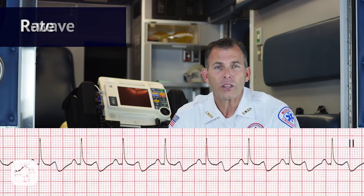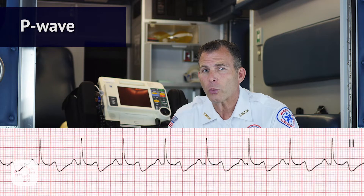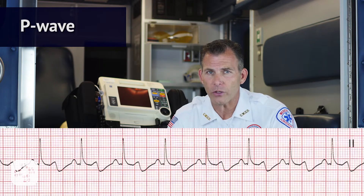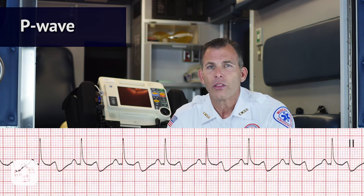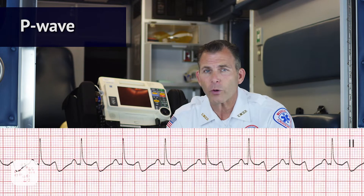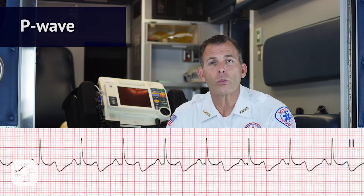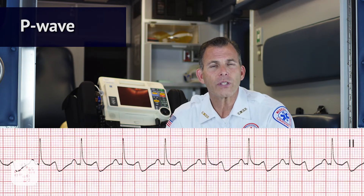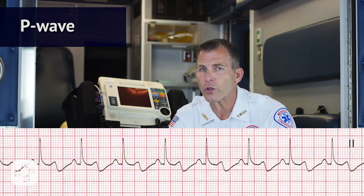Next we evaluate the P wave. Are they present? We can clearly see that the P waves are indeed present. Do they occur regularly? We see that each of the P waves does occur regularly. Is there one P wave for each QRS complex? There is one P wave for each QRS complex. Are the P waves smooth, rounded, and upright? Yes. Do all P waves have similar shapes? Each has a uniform shape and is smooth and rounded.